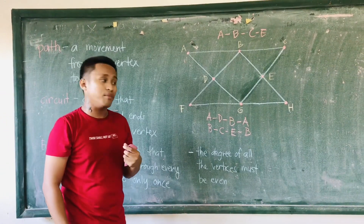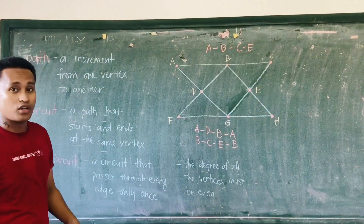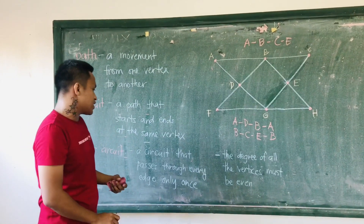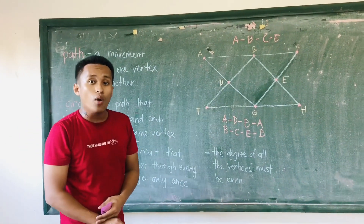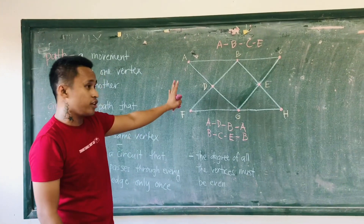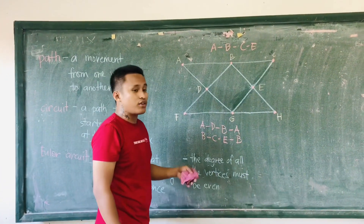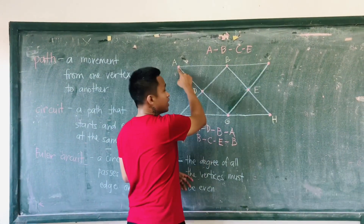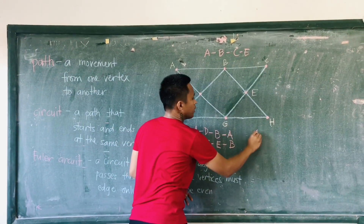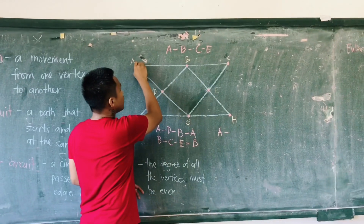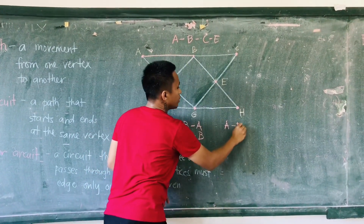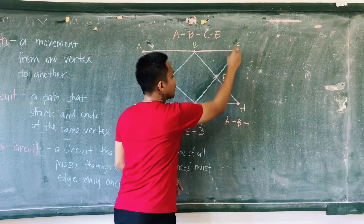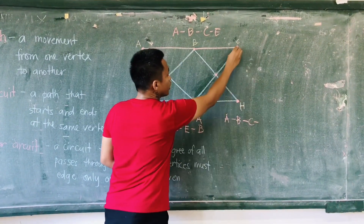The last topic we discussed is the Euler circuit. When you say Euler circuit, it's a circuit that passes through every edge only once. Based on this figure, we can derive an Euler circuit starting from A, then going to B, then going to C, then going to E.